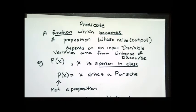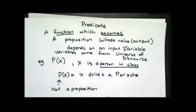But right now, P of X is not a proposition. Because X is not an actual person. X is a placeholder for a person. So until I actually do what's called binding that variable to a value, P of X is not a proposition.